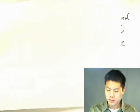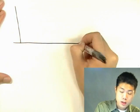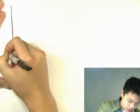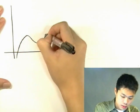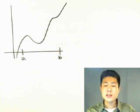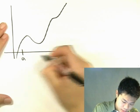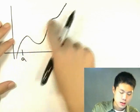Let me draw a graph and hopefully it will make it a bit more clear. So, say we have this graph here. I have this graph here — it looks something like this. Say a is here and b is here. So the first condition is that the graph is continuous between a and b. And yes, it is.